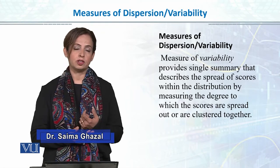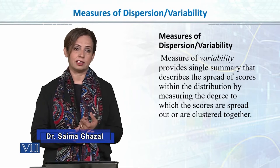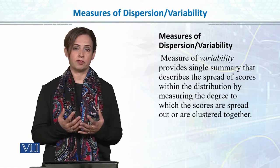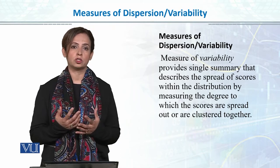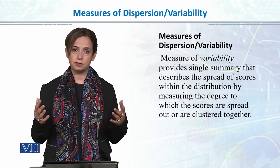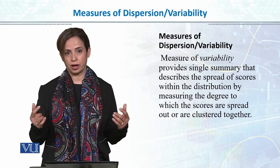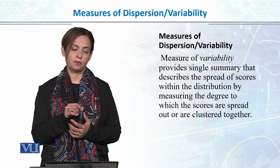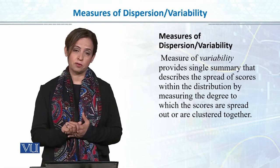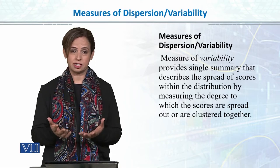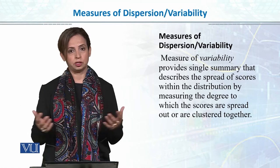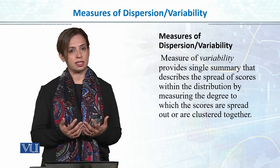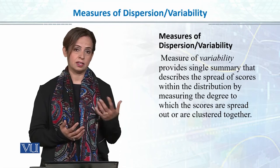Wherever we talk about mean, we also talk about standard deviation or variance. Mean gives a lot of information about the data, but we also want to know the variability or spread of scores — how scores are spread out rather than just a single central value. This function is fulfilled by measures of dispersion or measures of variability, which tell you about the dispersion or spread of scores in the data. These are equally important as measures of central tendency like mean.